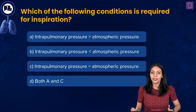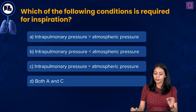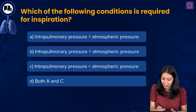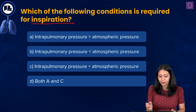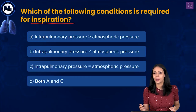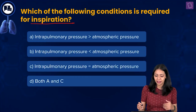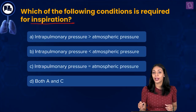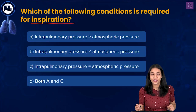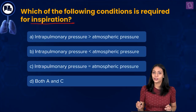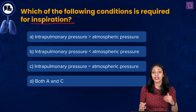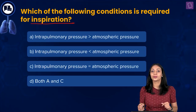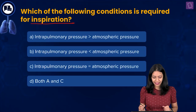Now let's look at the next question: which of the following conditions is required for inspiration? The options are: A) intrapulmonary pressure is greater than atmospheric pressure, B) intrapulmonary pressure is less than atmospheric pressure, C) intrapulmonary pressure is equal to atmospheric pressure, and D) both A and C.